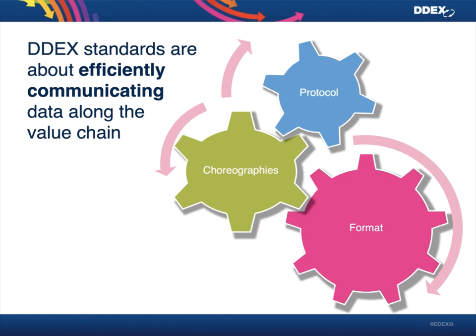The way in which we do that is around three areas of activity. Probably the best known is the creation of standard formats — that's the order in which the data is to be communicated and the relationships between different elements. The second is choreography — that's the order in which the messages have to be exchanged and the definition of trigger points that might require a message to be sent. Finally, the protocols by which the messages are actually exchanged — up until the last three to five years that has basically been using secure FTP sites, defining directory structures and file naming conventions.